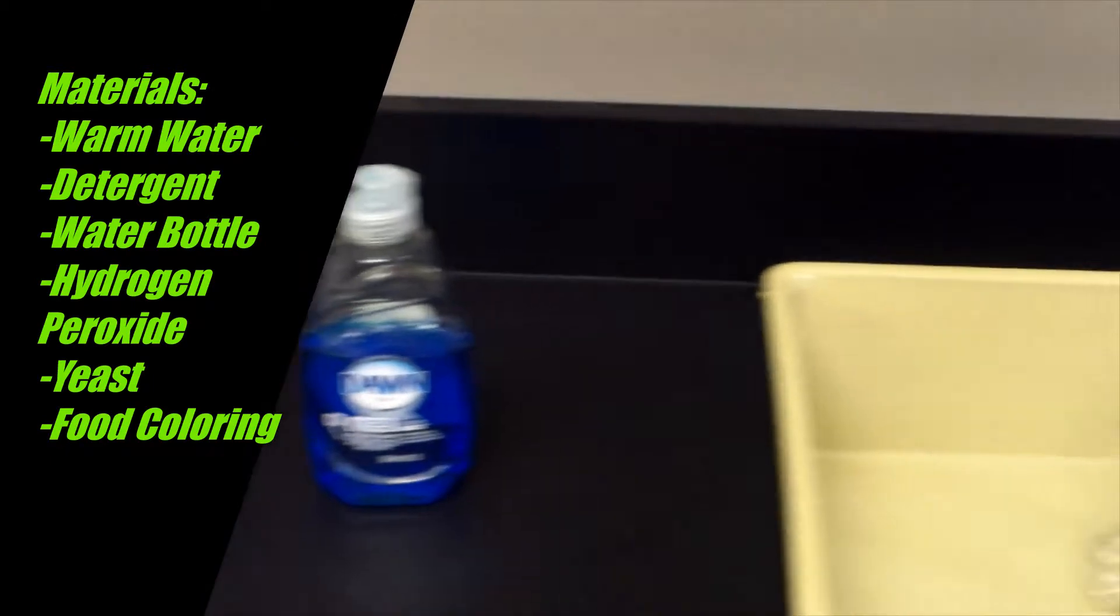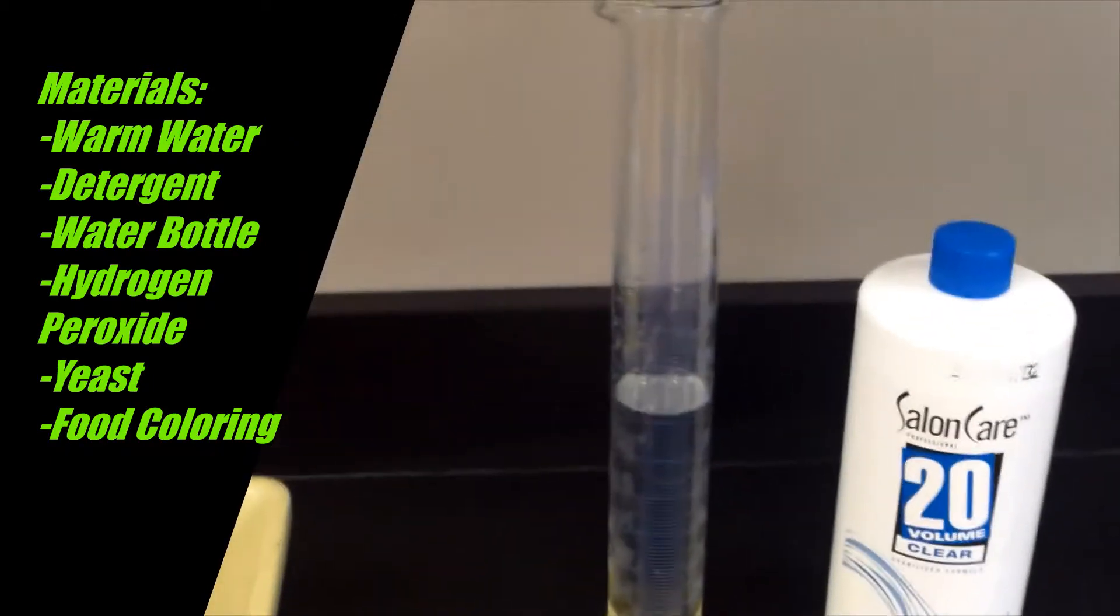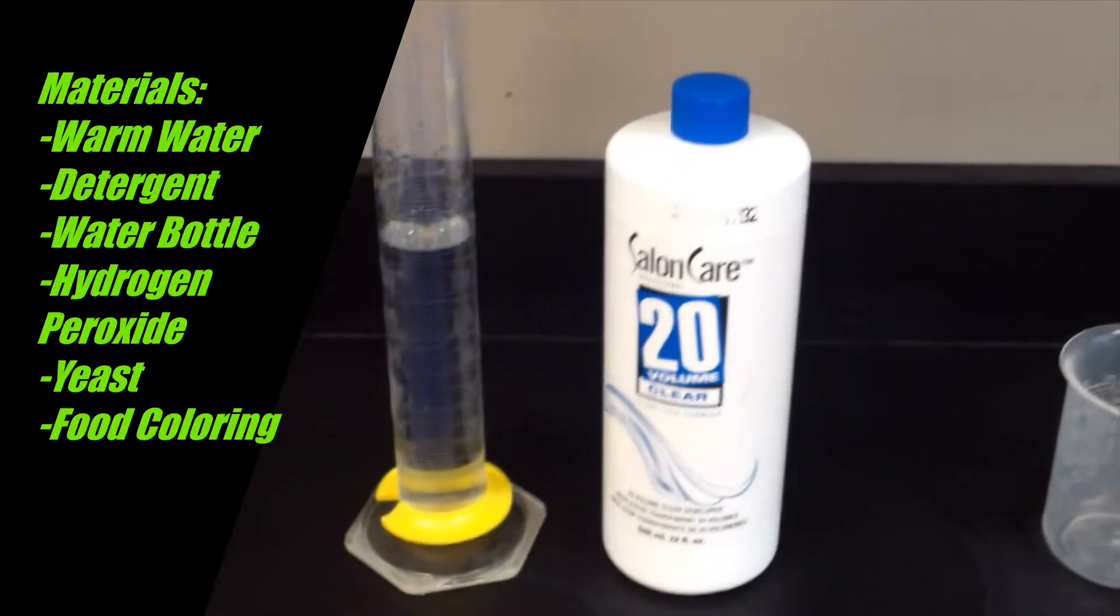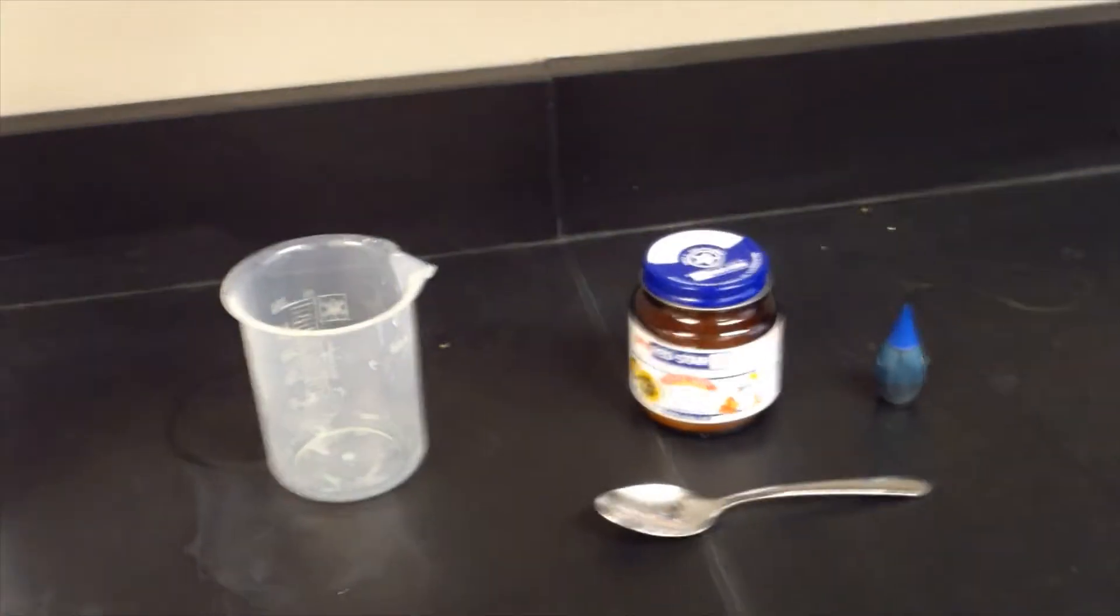The materials needed for this demo include warm water, dish detergent, an empty water bottle, hydrogen peroxide. I'm using a stronger version you can buy at salon supply stores, baker's yeast, and food coloring.